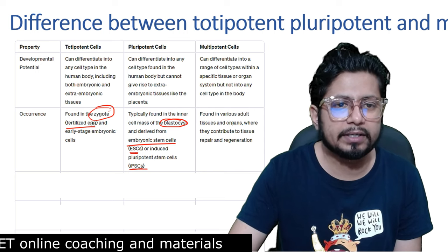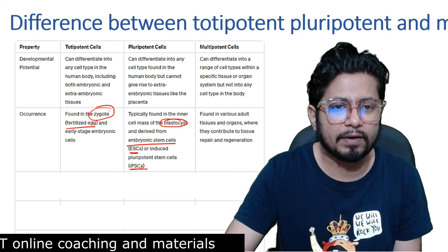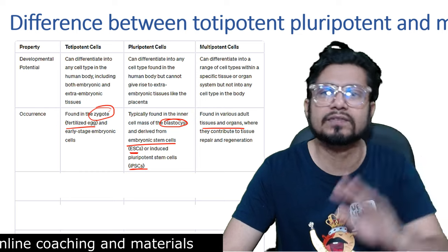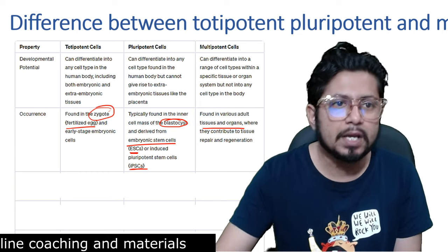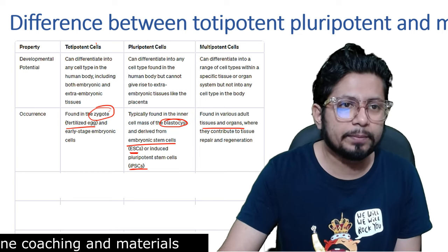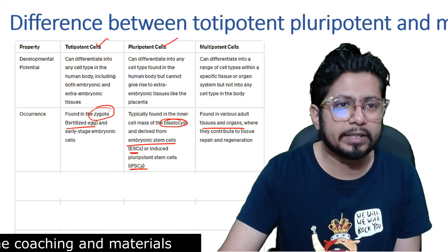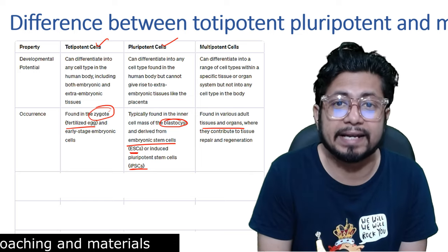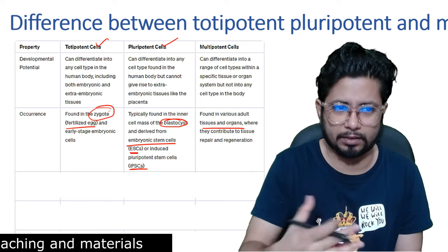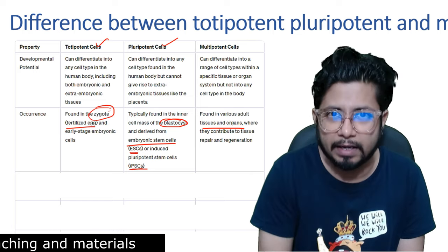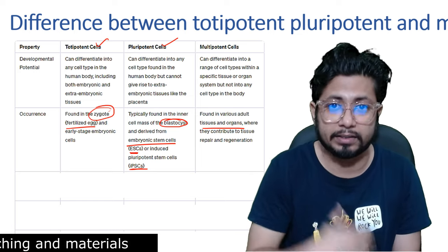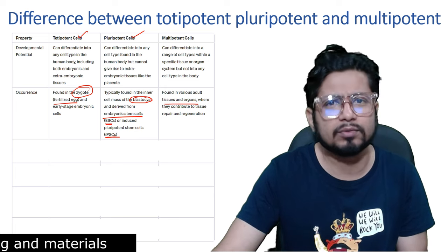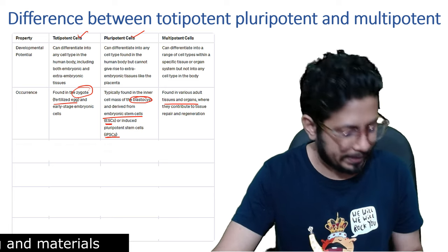Multipotent cells are found in various adult tissues and organs throughout the lifespan. Both totipotent and pluripotent cells are found during the early part of organism development — the development of the embryo. But multipotent cells are found throughout our entire lifespan.